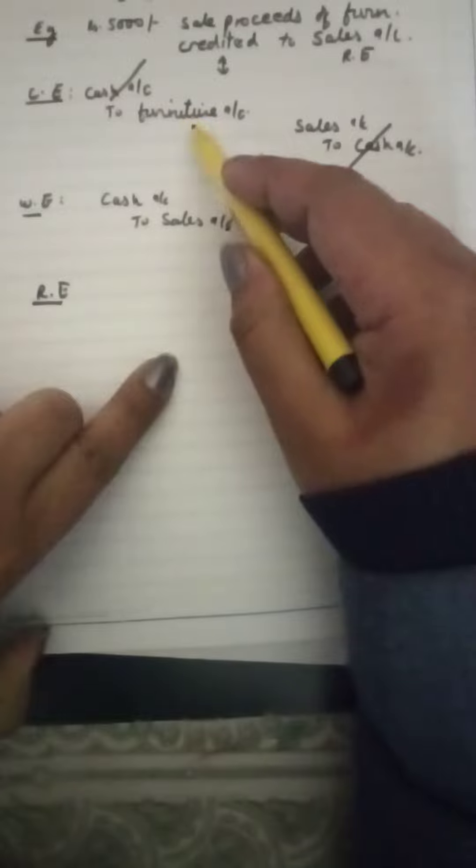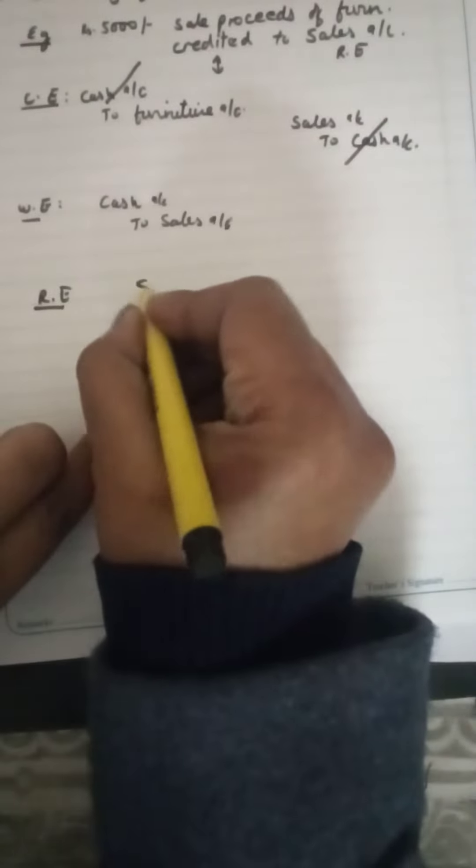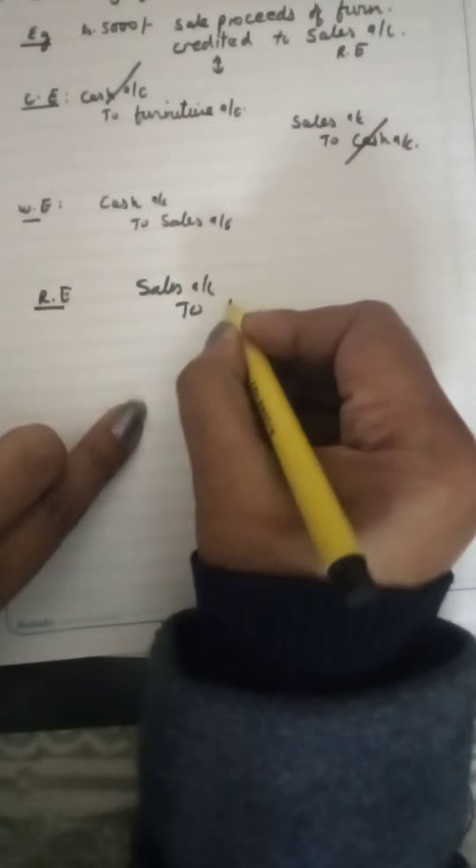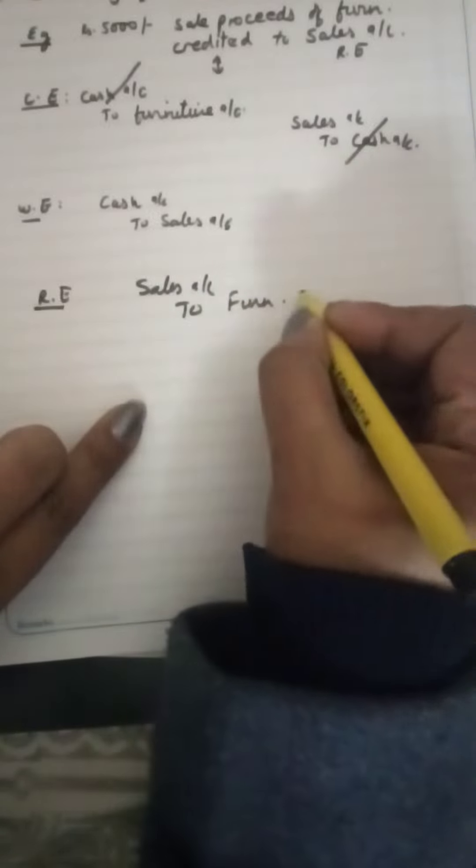What is left with me is sales account debited to furniture account. The rectification entry will be sales account debited to furniture account for rupees five thousand, and the entry has been rectified. The error has been removed.